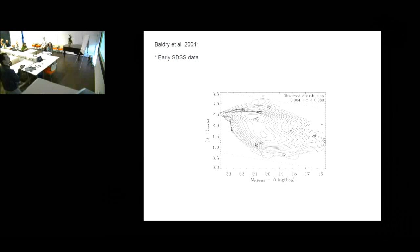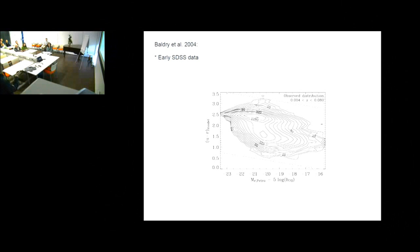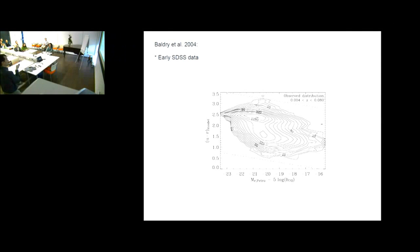This is an example of a color magnitude diagram of galaxies from early data releases of the Sloan Digital Sky Survey. The main features you would notice are two concentrations of galaxies: the so-called blue cloud and the so-called red sequence. The red sequence is more elongated and the blue cloud is more dispersed. If you think of these iso-density contours as iso-height contours, then you would have a green valley between these two peaks. Most galaxies are either blue or red.